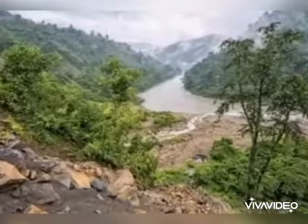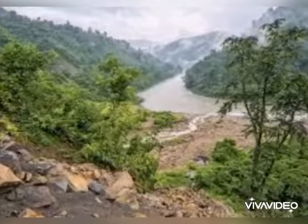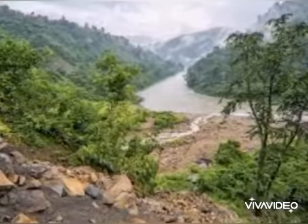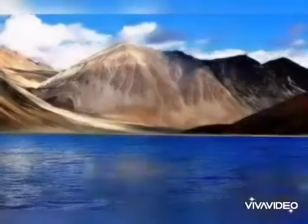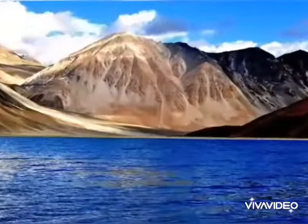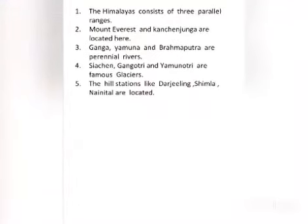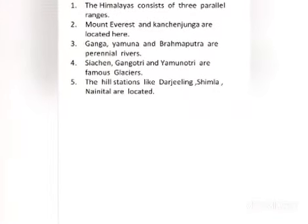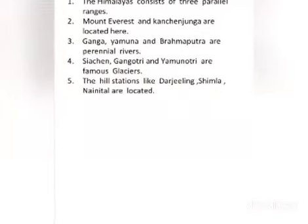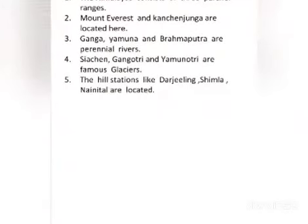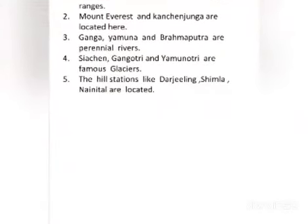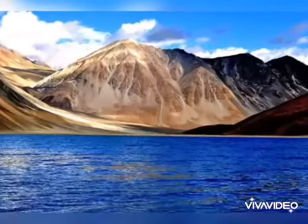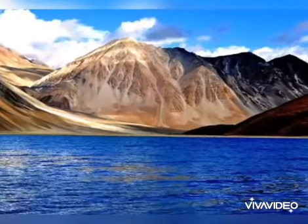Let's recap. The Himalayas consist of three parallel ranges. Mount Everest and Kanchenjunga are located here. Ganga, Yamuna and Brahmaputra are perennial rivers. Siachen, Gangotri and Yamunotri are famous glaciers. The hill stations like Darjeeling, Shimla and Nainital are located here.